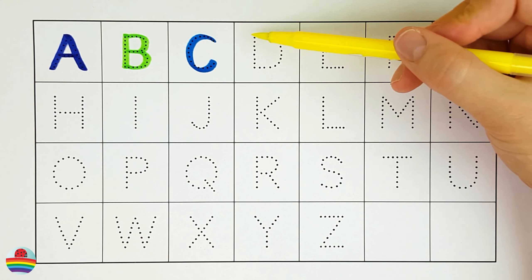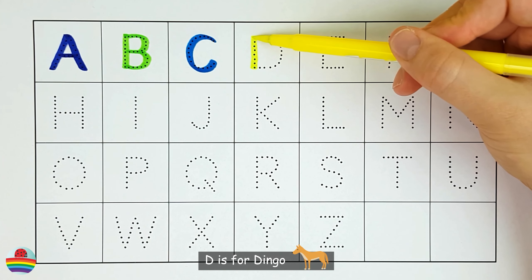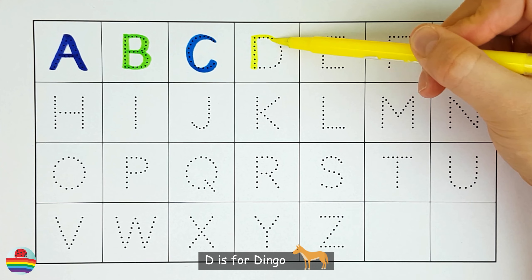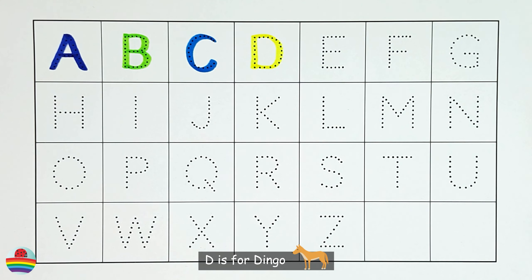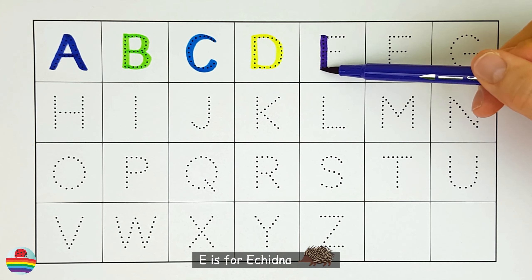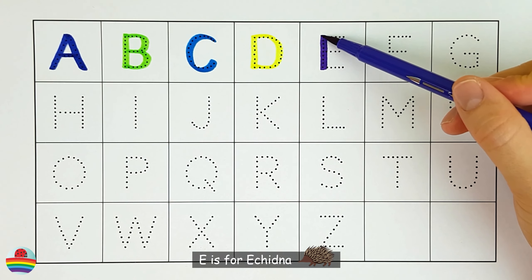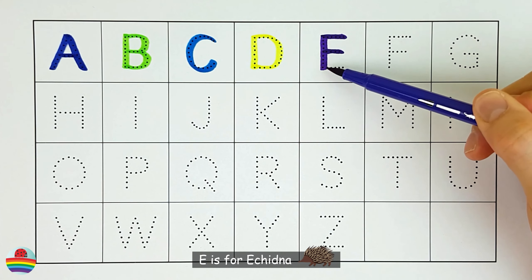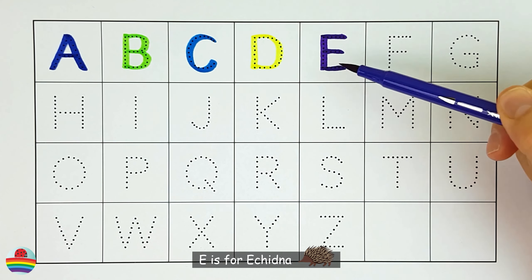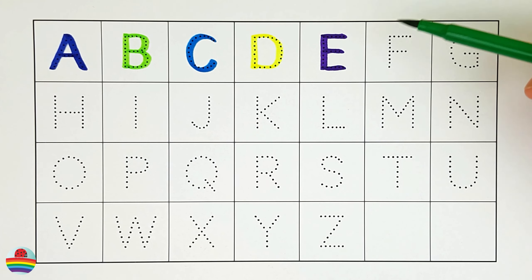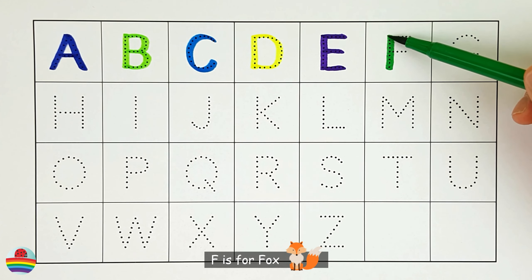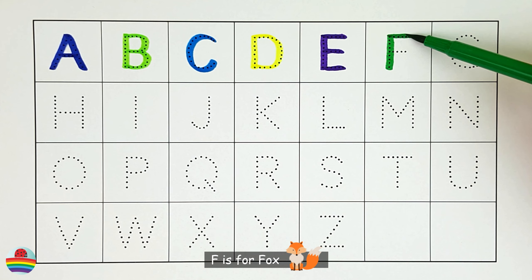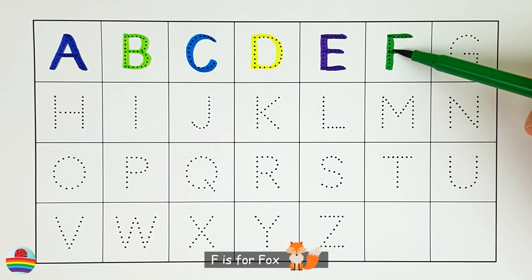D. D is for dingo. E. E is for echidna. F. F is for fox.